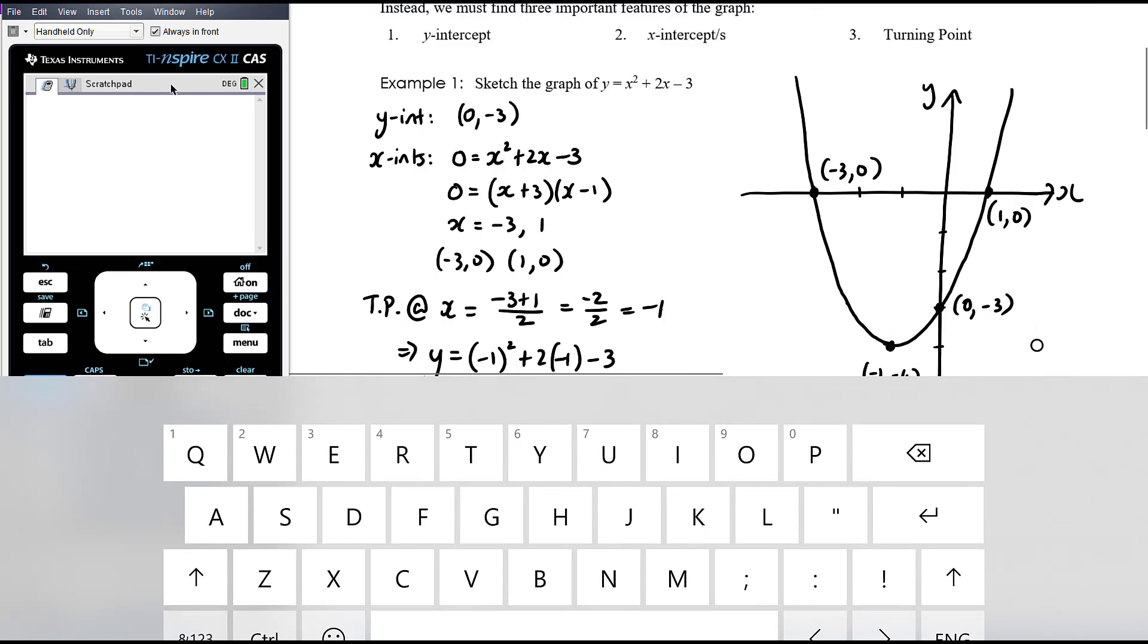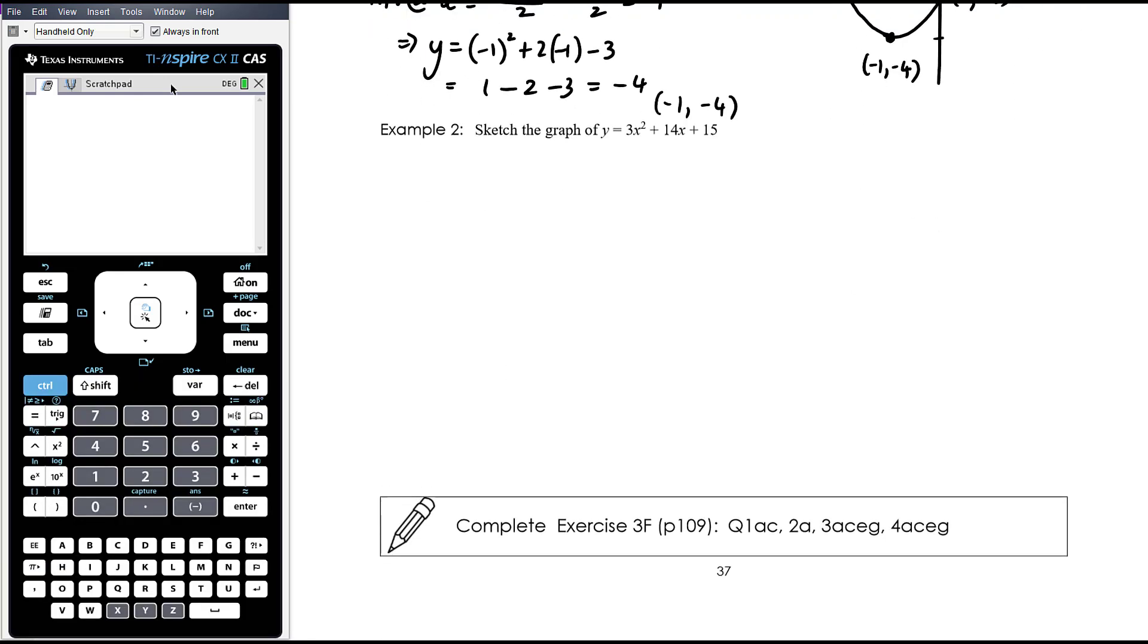Example 2 to finish. So sketch the graph of 3x squared plus 14x plus 15. Sorry, I've given us a bit of, it's a bit cramped here. My apologies. So the most obvious thing I can tell in this form is that the y-intercept is at 0, 15. So if I let x equal 0, I get y equals 15. I want to work out my x-intercepts, and from there I can think about my turning point.